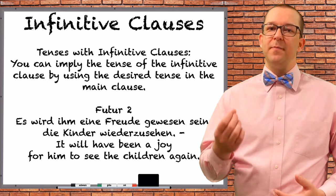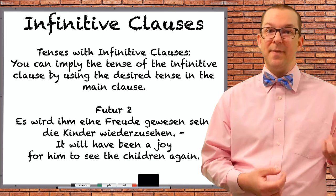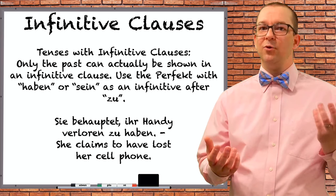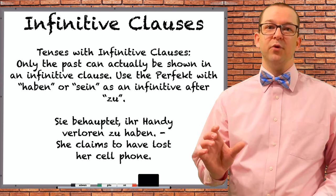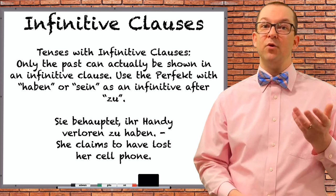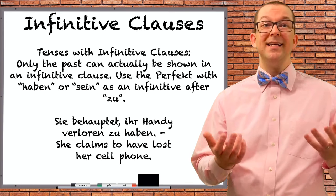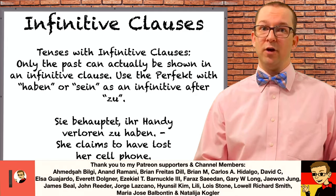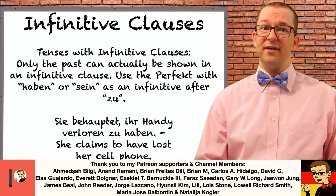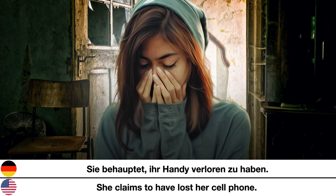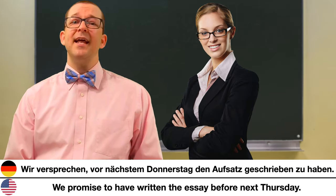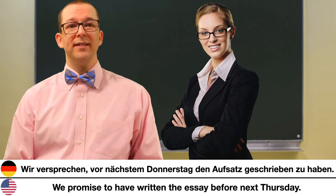If you want to show for sure that the dependent clause is taking place in the past, you need to use a version of the perfect tense. To form it, you use a past participle and a helper — either 'haben' or 'sein'. In an infinitive clause, the past participle goes before 'zu', and the infinitive of either 'haben' or 'sein' goes after it. Sie behauptet, ihr Handy verloren zu haben — She claims to have lost her cell phone. Er hofft, die Prüfung bestanden zu haben — He hopes to have passed the test. Wir versprechen, vor nächsten Donnerstag den Aufsatz geschrieben zu haben — We promise to have written the essay before next Thursday.